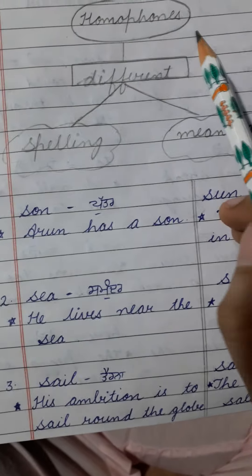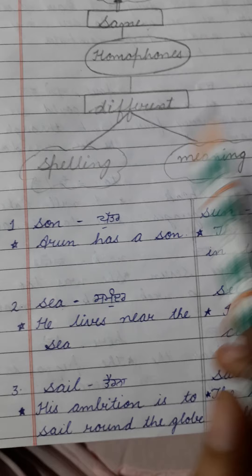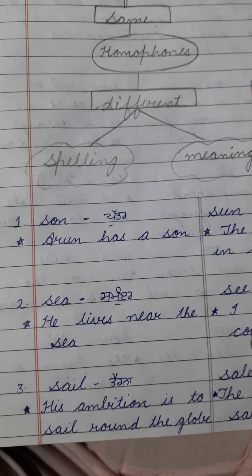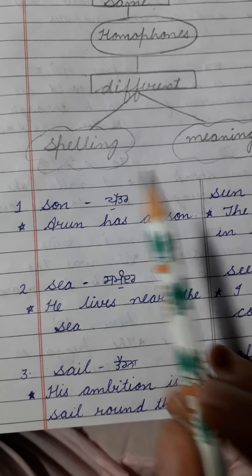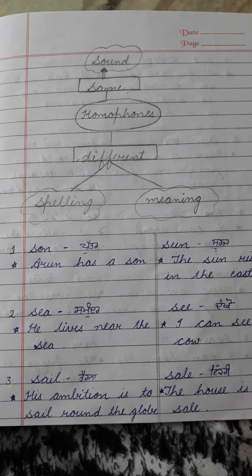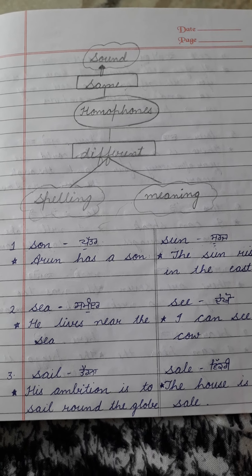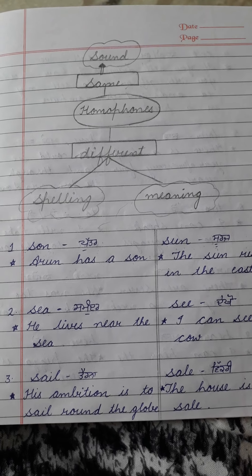There are some words in English that have the same sound but have completely different spelling and different meaning. These words are called homophones. Let's see some more examples to make things more clear.